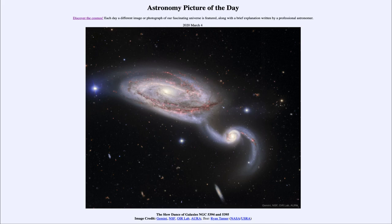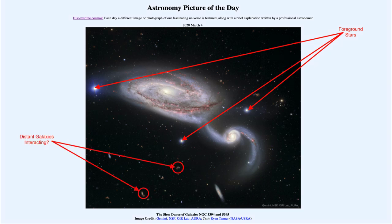Now around the rest of the image, we can see a number of other stars and galaxies. Some of those stars are foreground stars within our own Milky Way, but many of the objects that you see here are actually more distant galaxies, and many of those galaxies could be colliding as well.